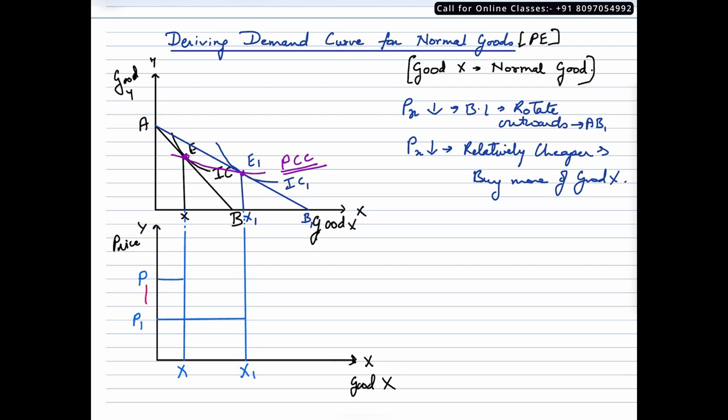So let us say the fall could be depicted somewhere around here. Let us say the price fell to P1. So when the price fell to P1, the consumer increased his quantity of good X to X1. Joining these two points,